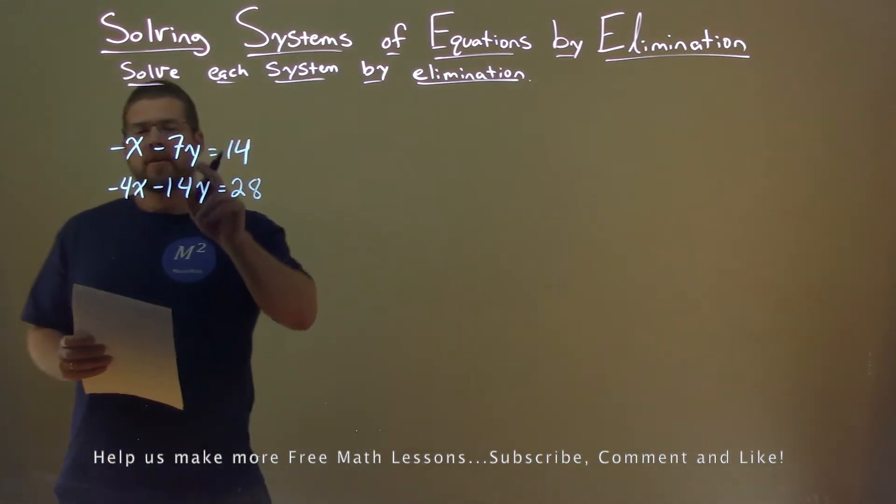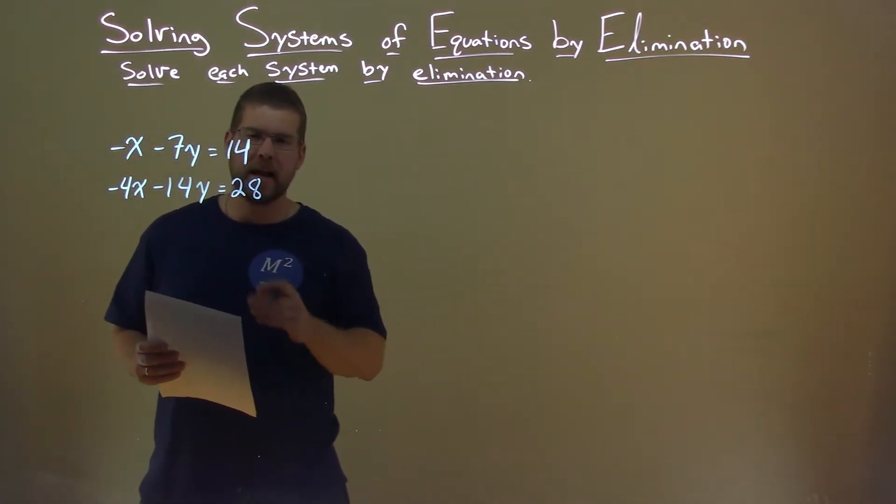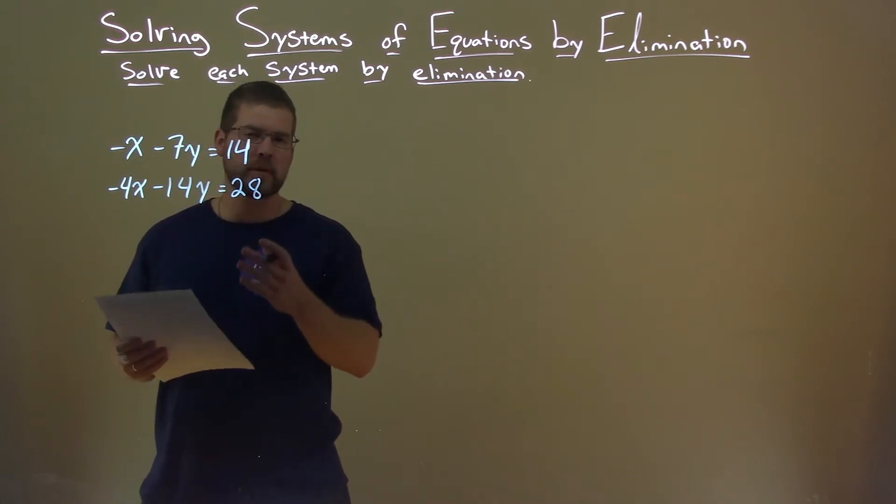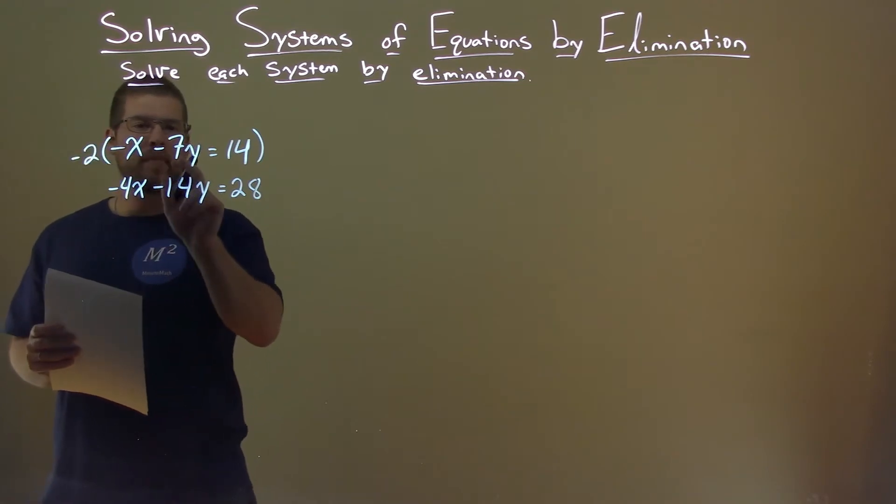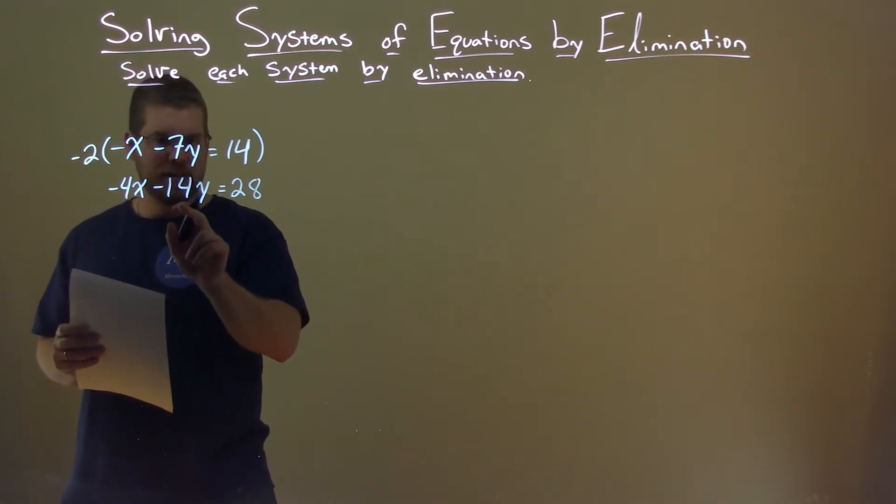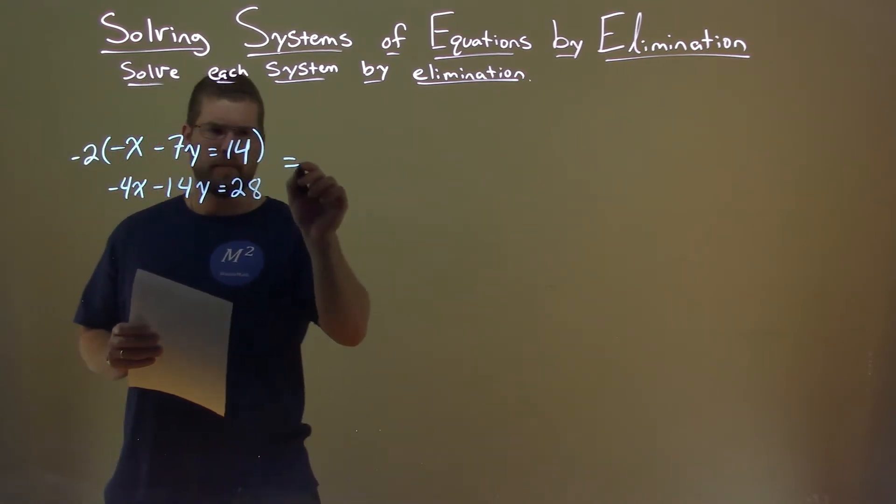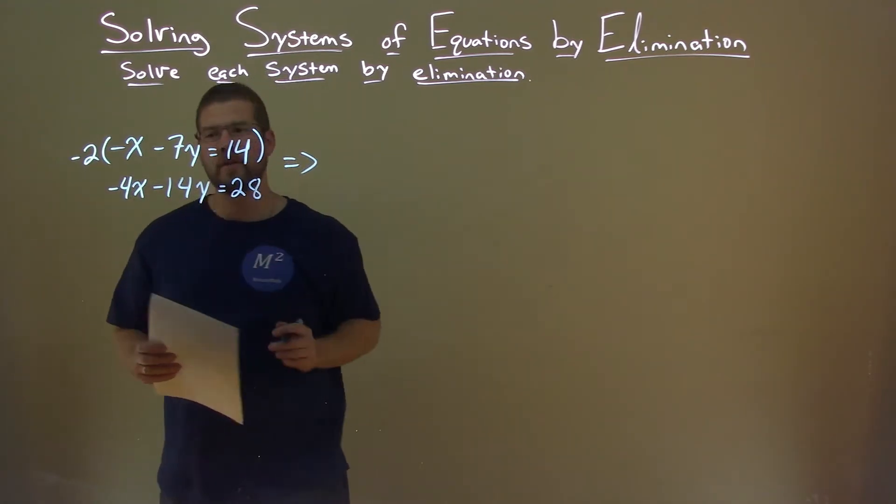I see the 7 and 14 and I can multiply 7 by 2 to get 14 so there's my goal. If I multiply it by a negative 2 though, I'll get a positive 14y here which then eliminates the y variable. So let's multiply the whole top equation by negative 2.